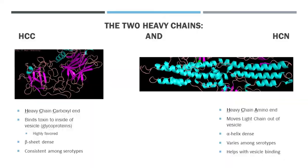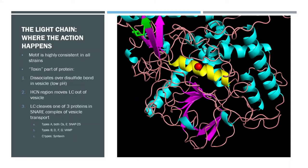The two heavy chains are named after which end of the protein they're on, and right off the bat we can see quite a few structural differences between them. The carboxyl end is very heavy in beta sheets, and the amino end is very heavy in alpha helices. In a highly favored reaction, the carboxyl end binds the toxin to the glycoproteins found inside the synaptic vesicles. While the amino end helps in binding too, its primary job is to move the light chain out of the vesicles. Another key difference is that while the amino end varies among the different serotypes, the carboxyl end remains relatively consistent throughout.